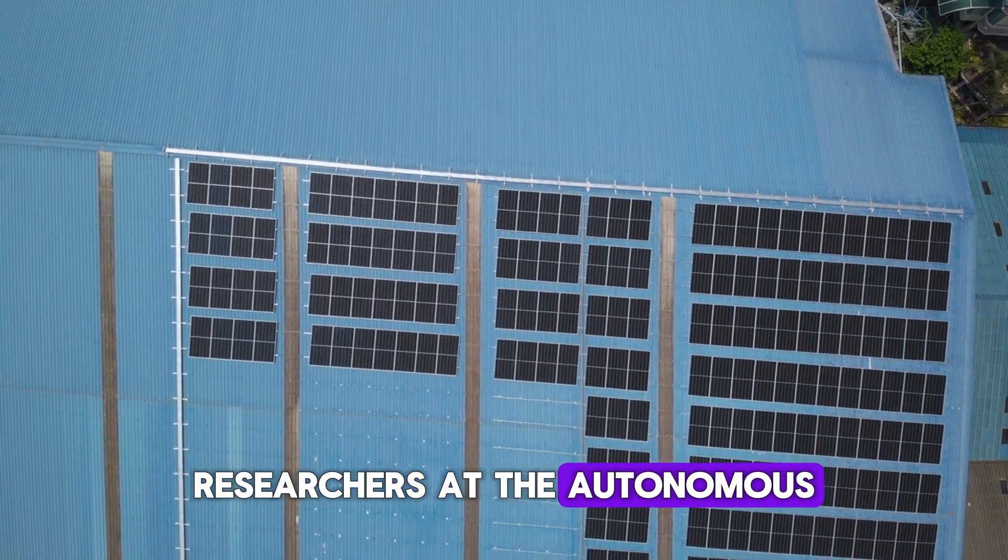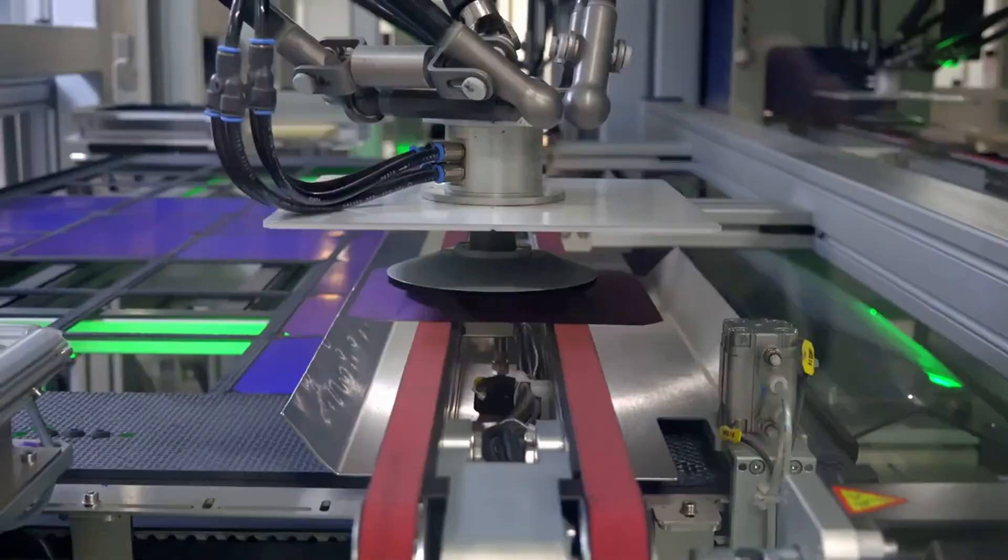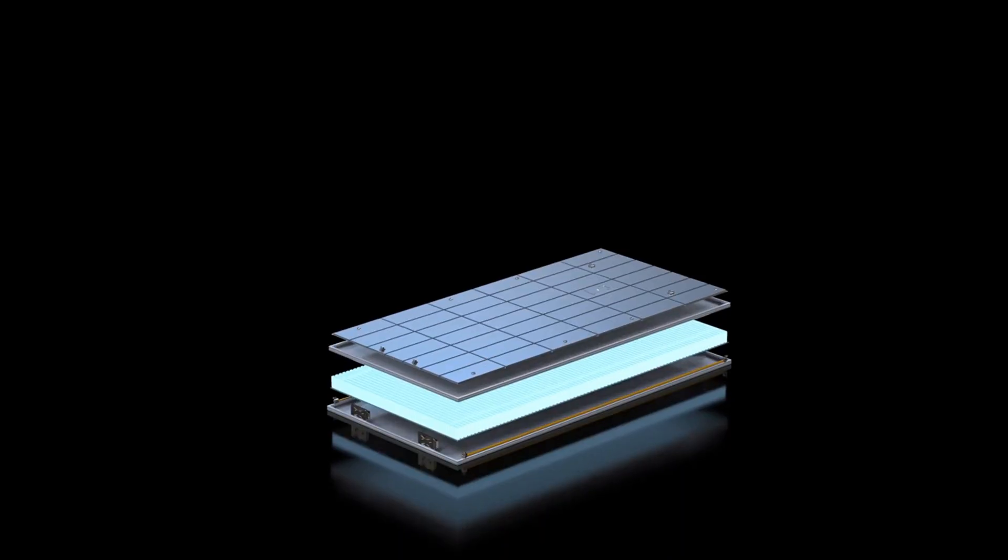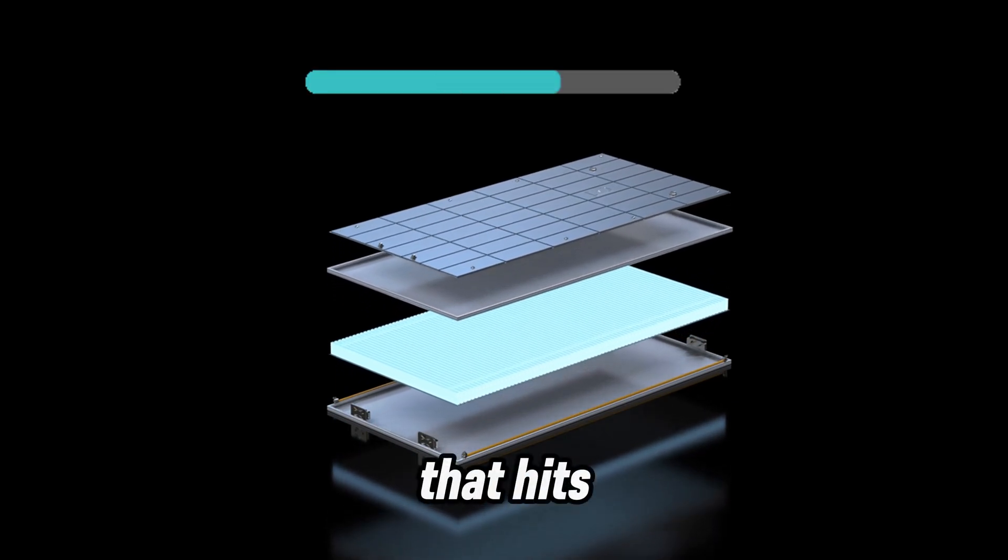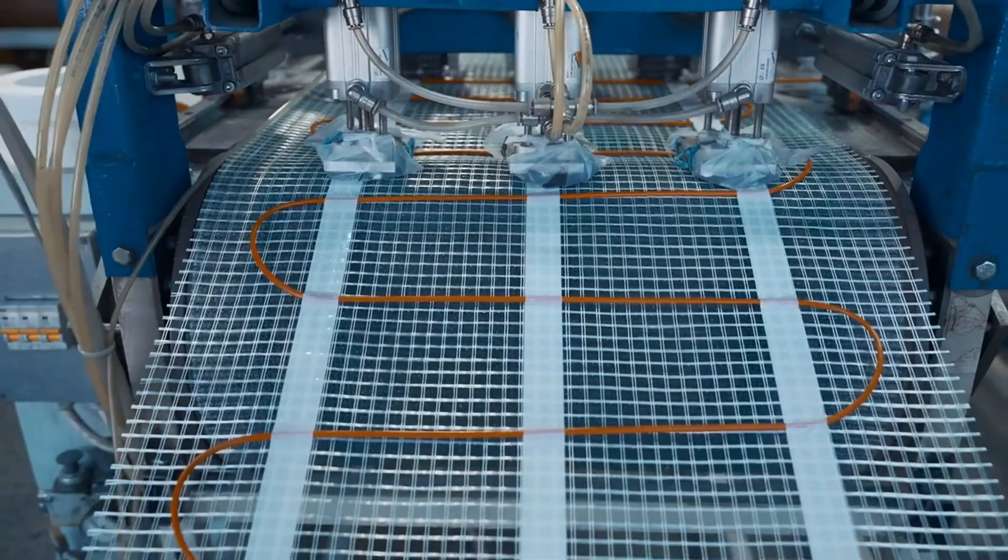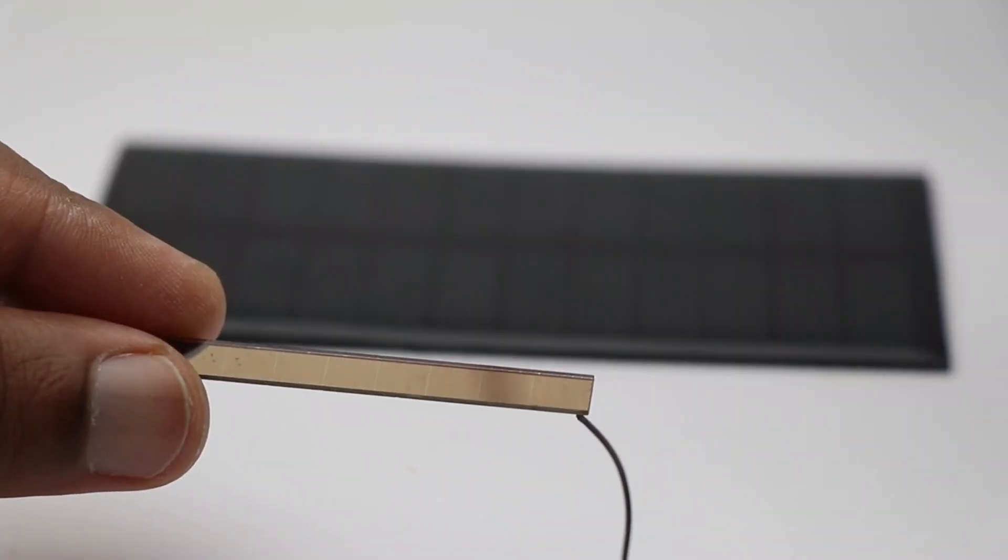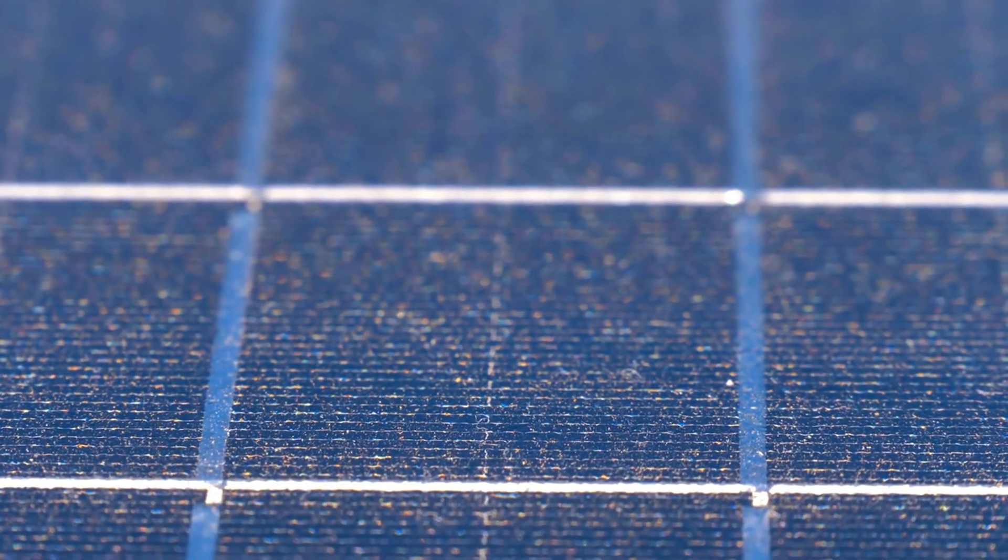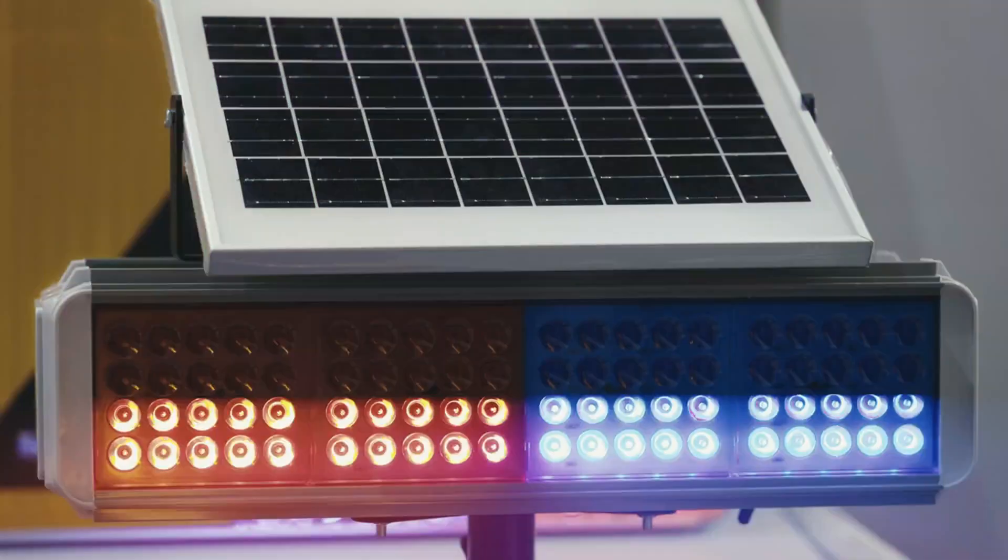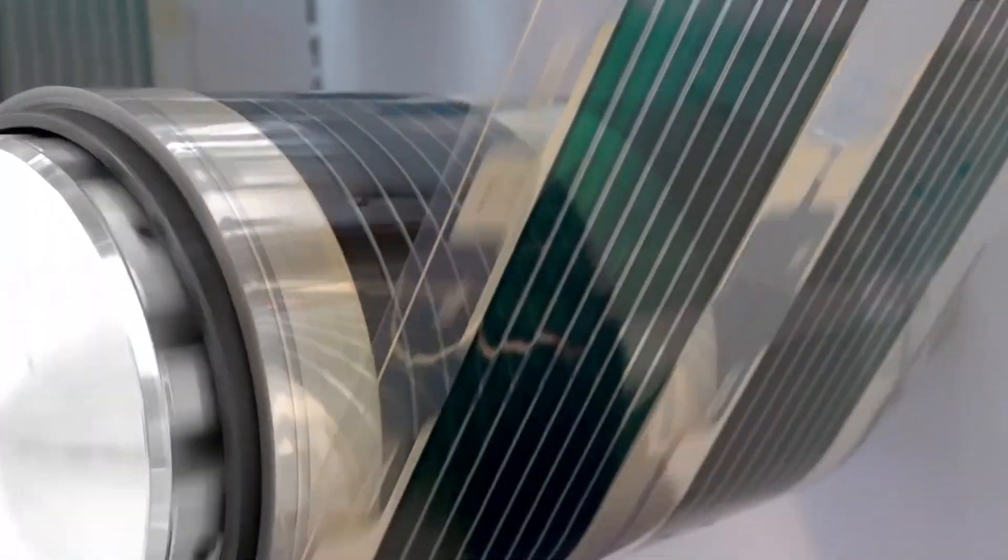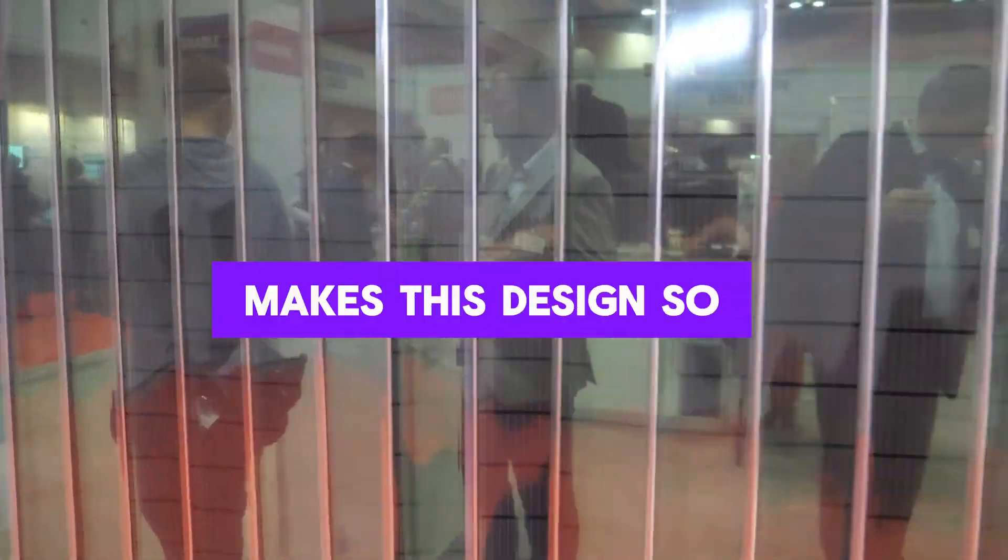Researchers at the Autonomous University of Querétaro just pulled off something big. They've designed a new type of thin-film solar cell that hits an impressive 28 percent efficiency. Yes, 28 percent, using only sustainable materials. That's more than double what most thin-film cells achieve today. It's a huge leap, and it could reshape how we think about solar power.